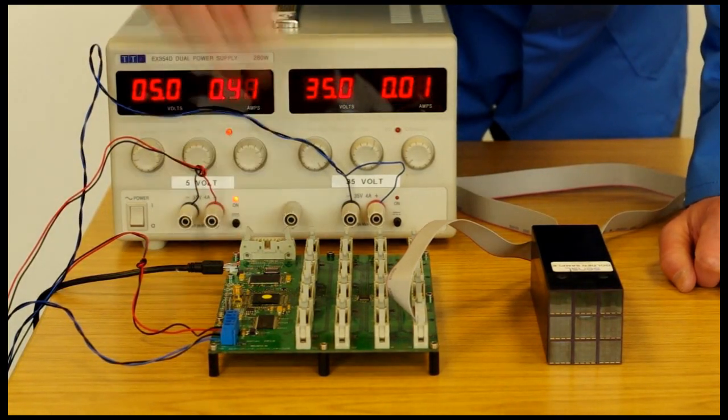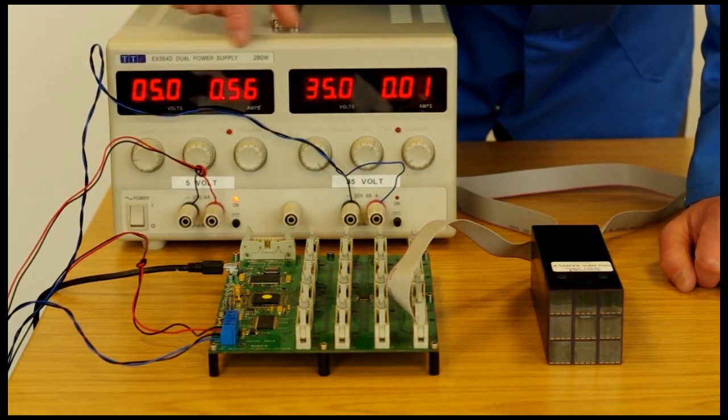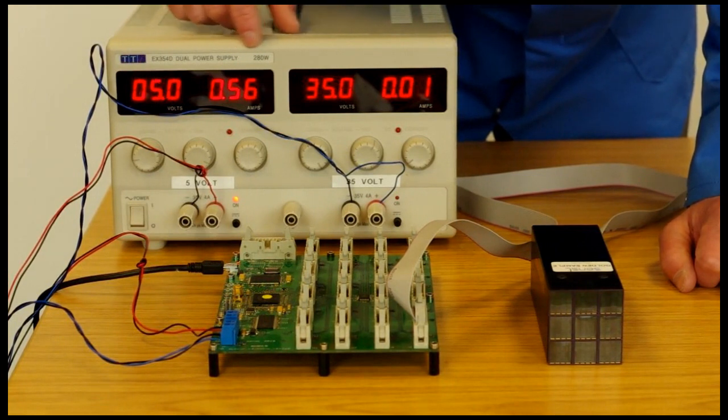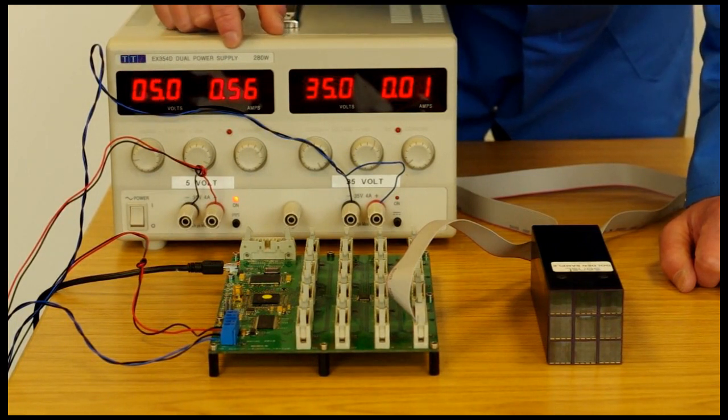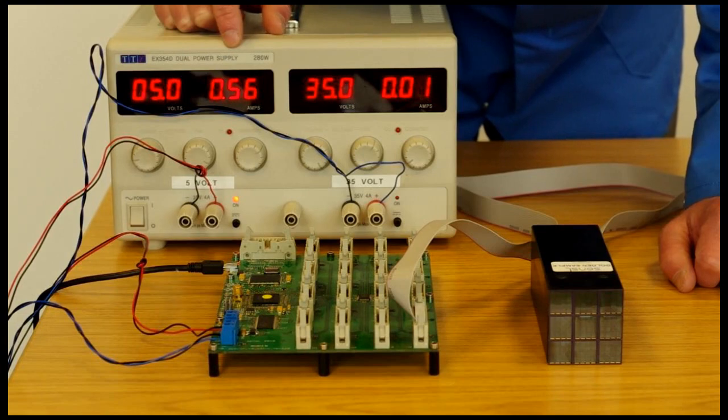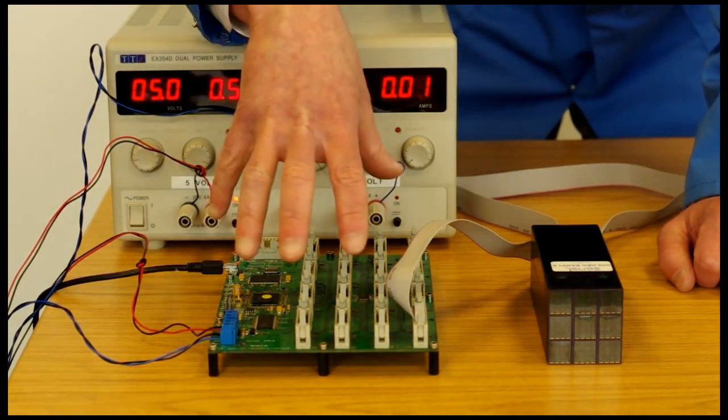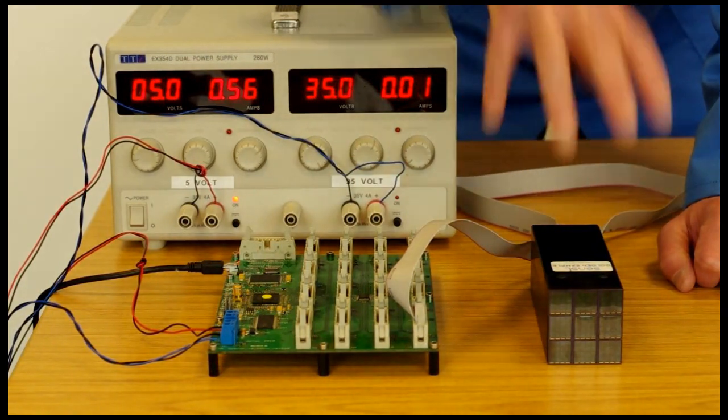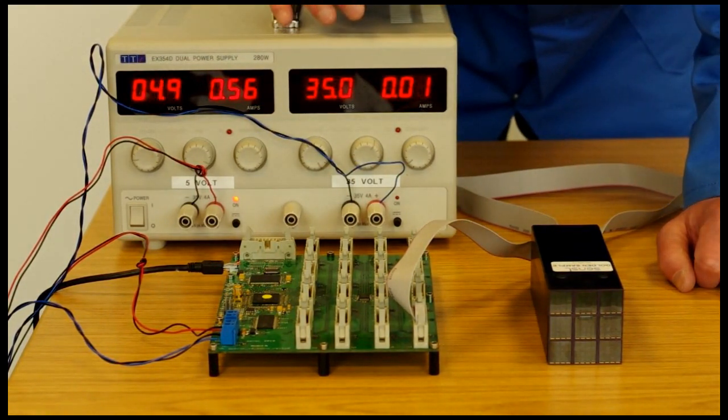I'll start off by turning on the plus 5 volts. You can see there's about 560 milliamps of current flowing in the device. And that's fine. That just indicates that the EVB is powered and the Matrix SL9 is also receiving power.